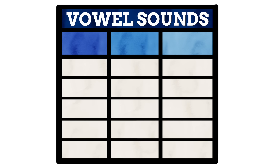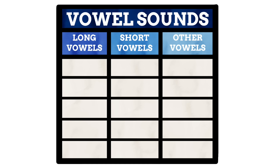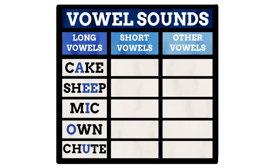Long vowels are when one of those five traditional vowels makes a sound akin to the name of the letter. The aforementioned A in cake is a long vowel — as in cake, we say the sound of A like the name of the letter A, which is called a long A. There are of course also long E's, I's, O's, and U's too. Examples of these include sheep, mic, own, and shoot respectively. You can hear in all these words the vowels make a sound like the name of their letter.